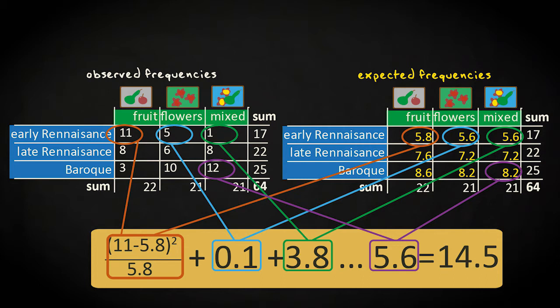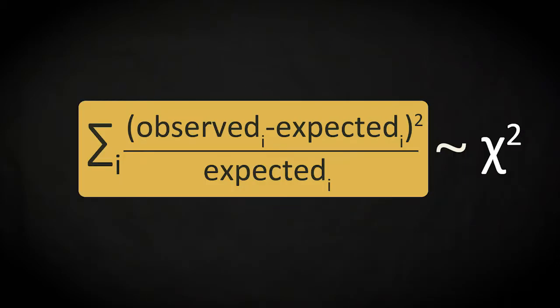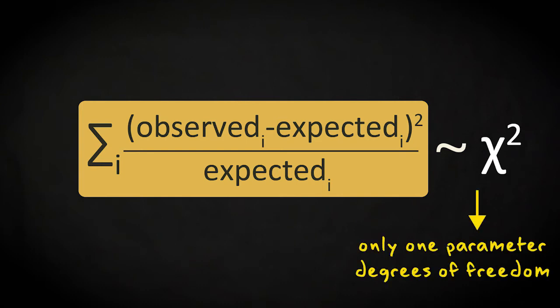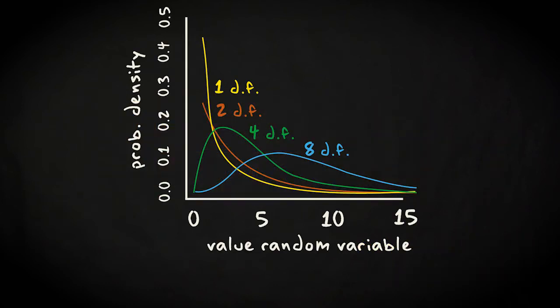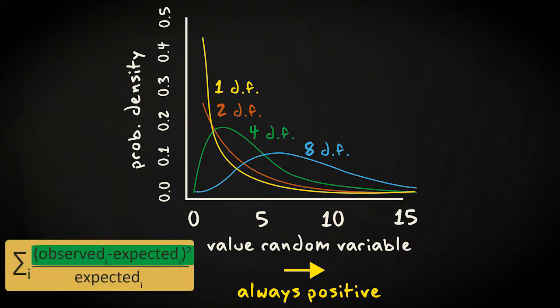The chi-squared statistic follows a chi-squared distribution. It's a distribution with only one parameter, degrees of freedom, and that parameter completely determines the shape of that distribution. Here you see the chi-squared distribution with 1, 2, 4, and 8 degrees of freedom. The distribution is always positive, which makes sense if you think about it. The formula to calculate the chi-squared statistic can never lead to negative values, because the term in the numerator is squared.